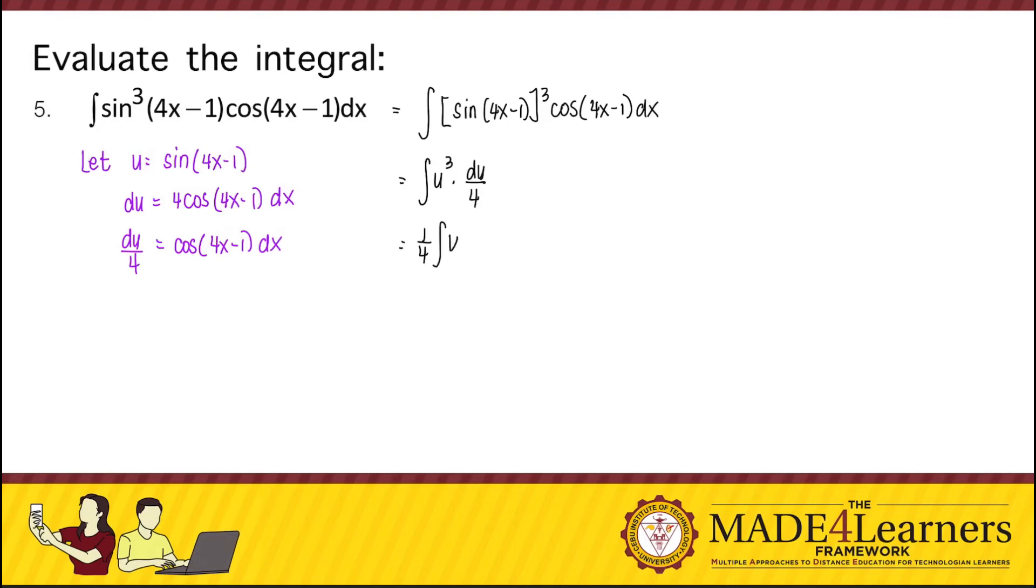So you put 1 fourth outside, integrate u cube du using the power formula. So we have u to the power of 4 over 4 plus c. Multiplying and bringing back u, that's sine to the power of 4 of 4x minus 1, and 4 times 4 equals 16 plus c.